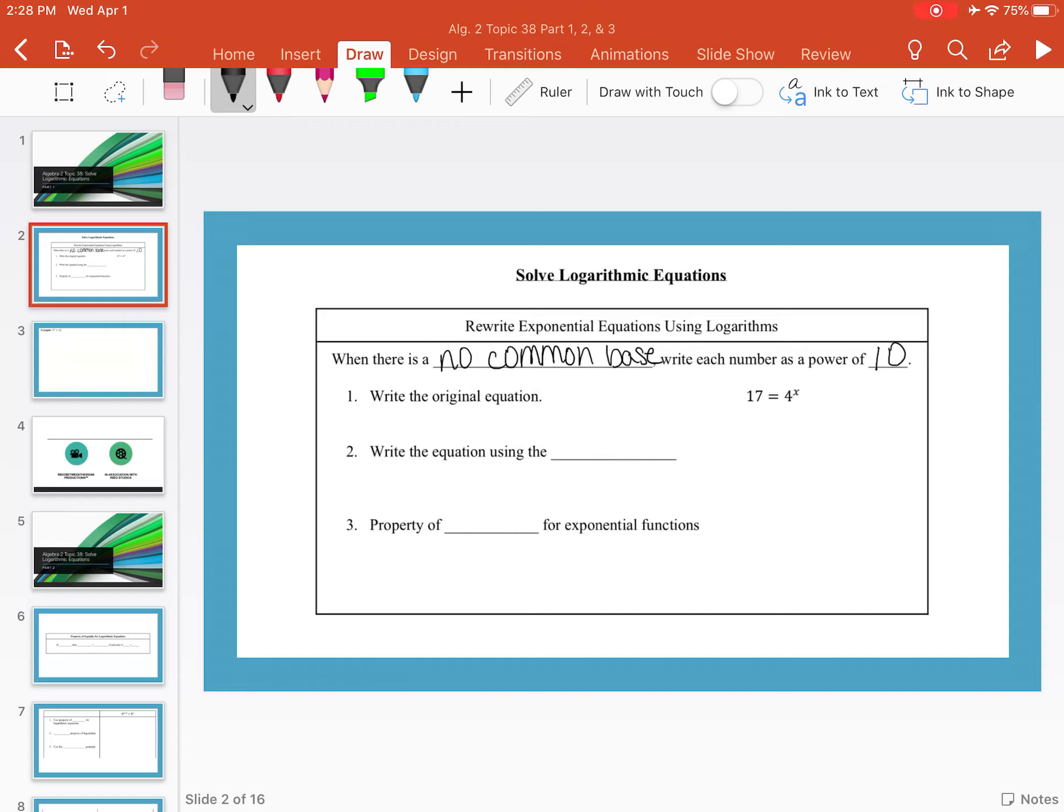And what I mean is we're used to seeing problems where we have 3 to the x equals 27 to the 2x plus 4, where our bases here can be rewritten using the same base, here the common base would be 3.